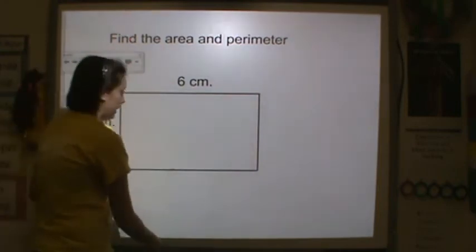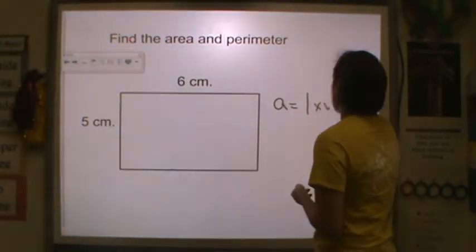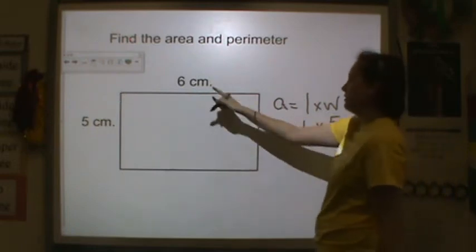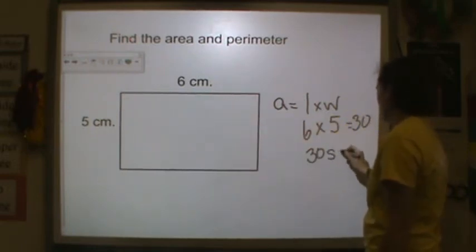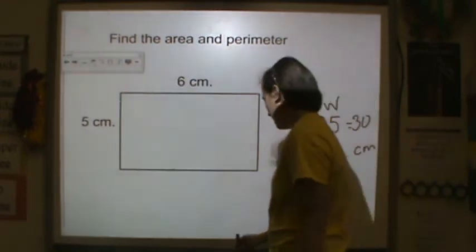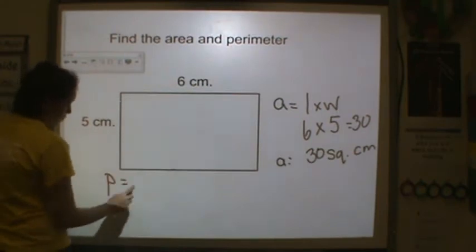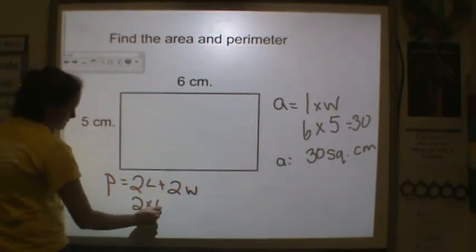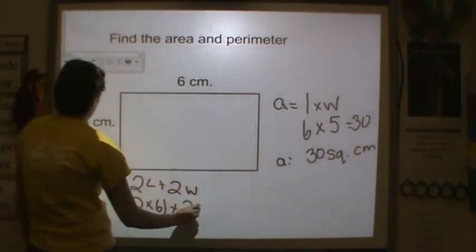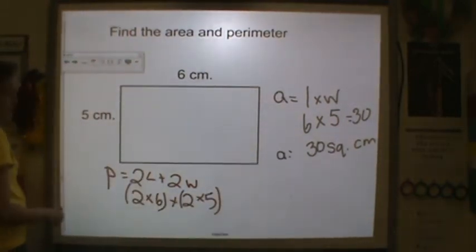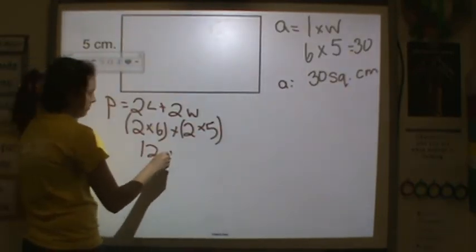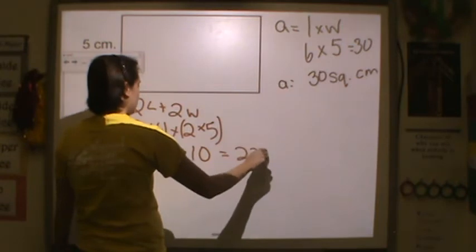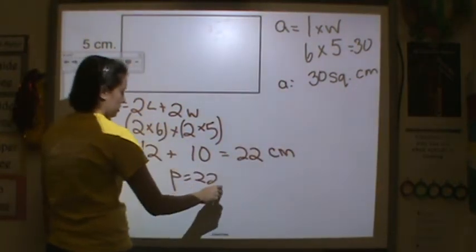Alright, finding the area and perimeter here. Area equals length times width. My length is 6 and my width is 5, so together I have 30. The unit is centimeters, so 30 square centimeters is my area. Perimeter equals 2L plus 2W: 2 times 6 plus 2 times 5 equals 12 plus 10 equals 22 centimeters. So the perimeter is 22 centimeters.